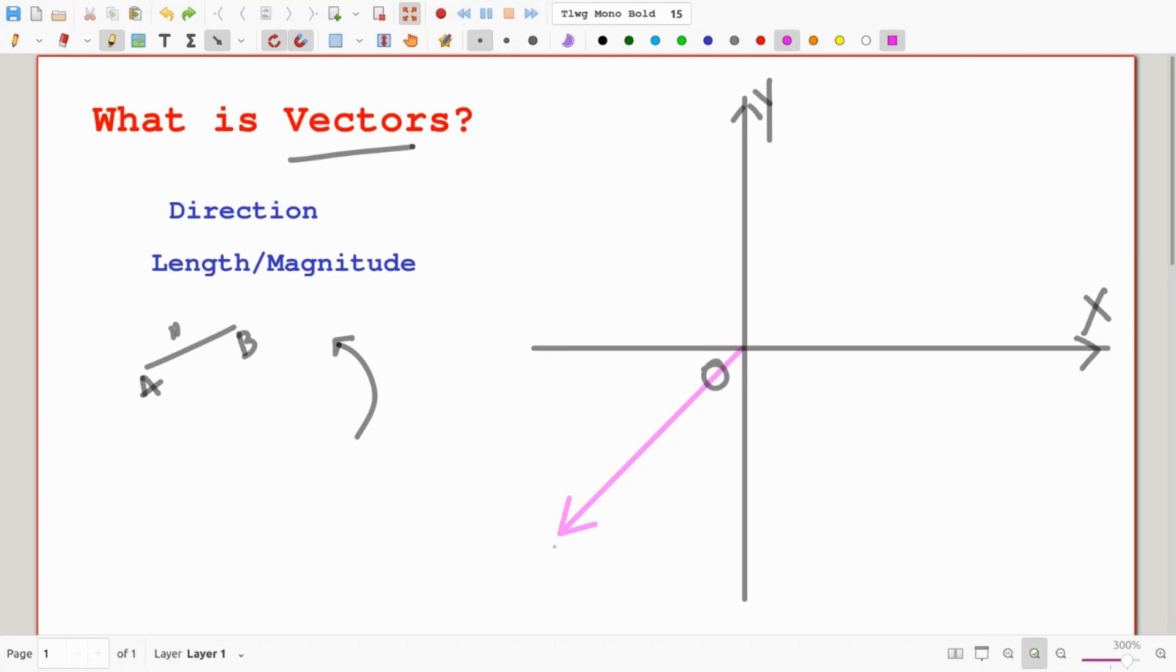And it also clearly has a certain length. And so this is a vector and that's exactly how we graph vectors, just as arrows pointing to a certain direction, having a certain length. So these instances show how exactly we graph a vector, having a certain length, certain direction.